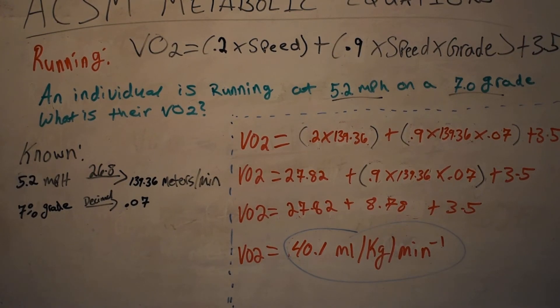The next part I'm going to do is simply just do the math of the second part: 0.9 times 139.36 times 0.07. So again, that's all I'm going to do, and once I have that answer or that value, which is 8.78, just rewrite the equation again. VO2 equals 27.82 plus 8.78 plus 3.5.